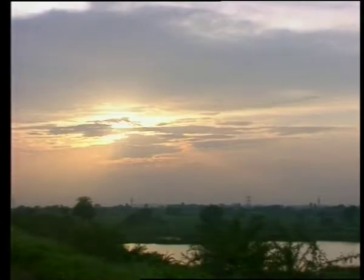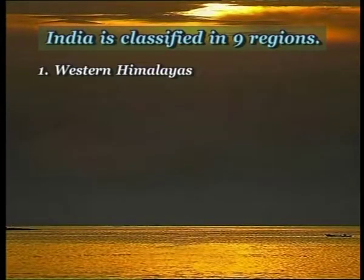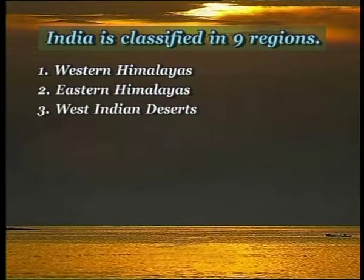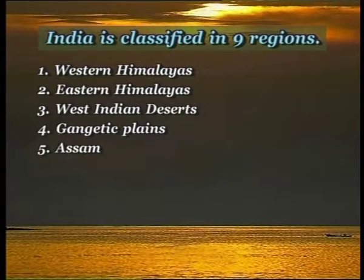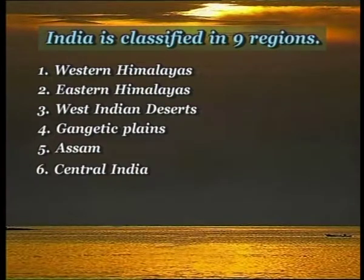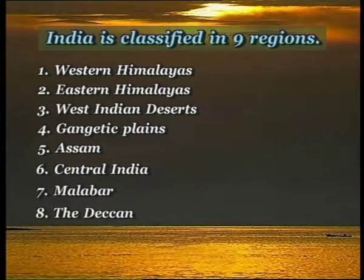On the basis of Phytogeography, that is vegetation, India is classified into nine regions: Western Himalayas, Eastern Himalayas, West Indian deserts, Gangetic plains, Assam, Central India, Malabar, the Deccan, and the islands.